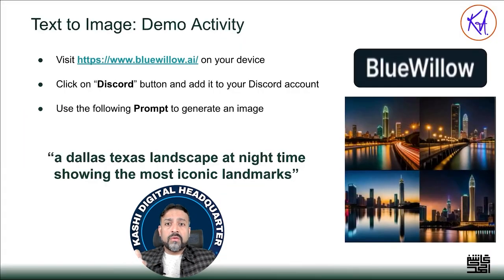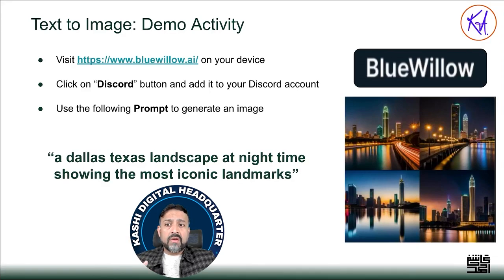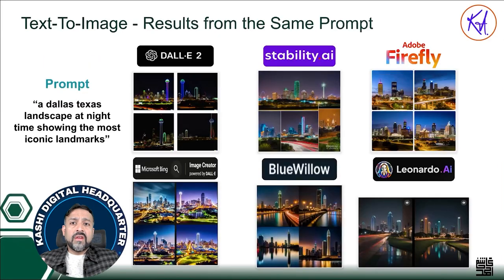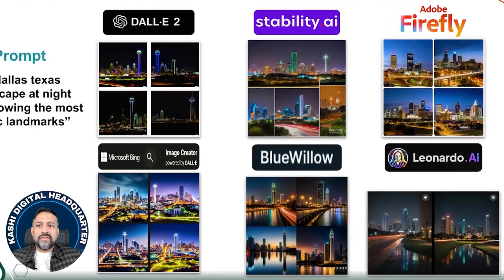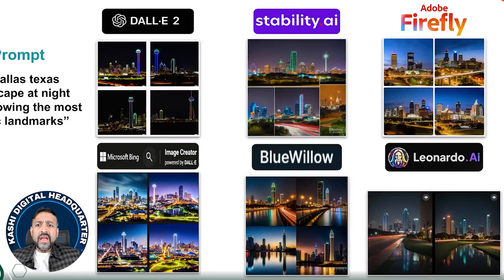The last one I tried is Blue Willow — another favorite of mine. If you don't want a paid subscription for any tool, go to Blue Willow. It uses Discord, a separate software you need to download. It has a mobile app. You have to do slash-imagine and put the prompt. So to summarize: I gave the same prompt — 'A Dallas, Texas landscape at night showing the most iconic landmarks' — to all tools, and you can see the differences in each. For me, DALL-E 2 is the most realistic. Microsoft Bing is good too. Stability AI is good too. Blue Willow didn't have the iconic elements I liked.